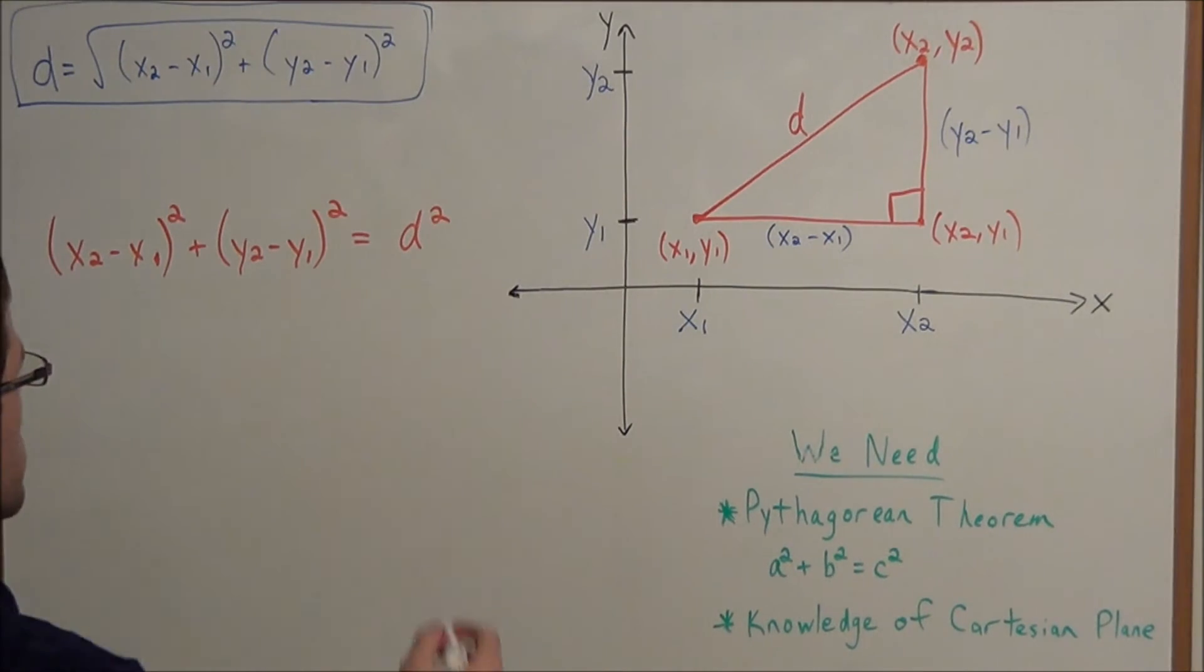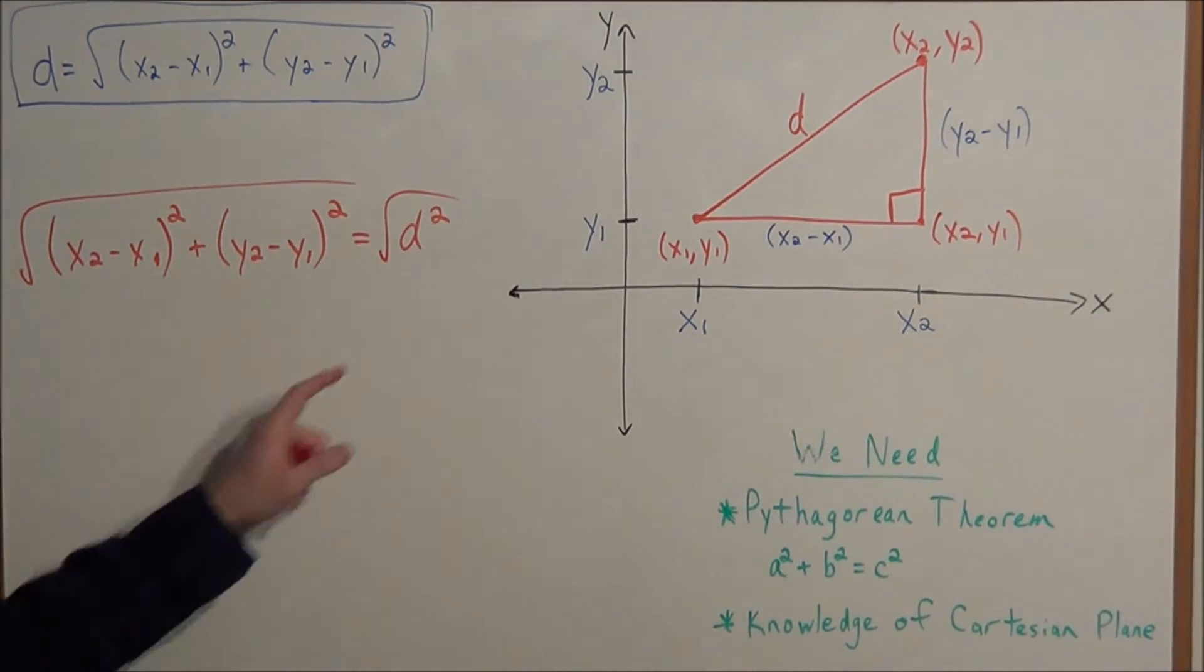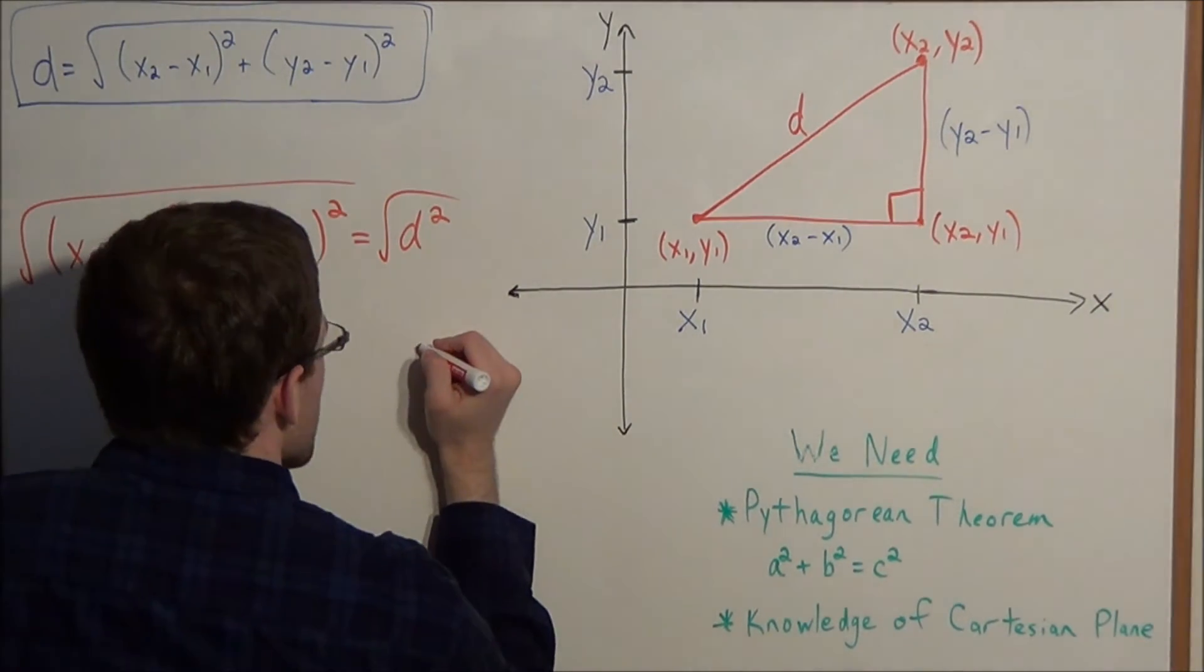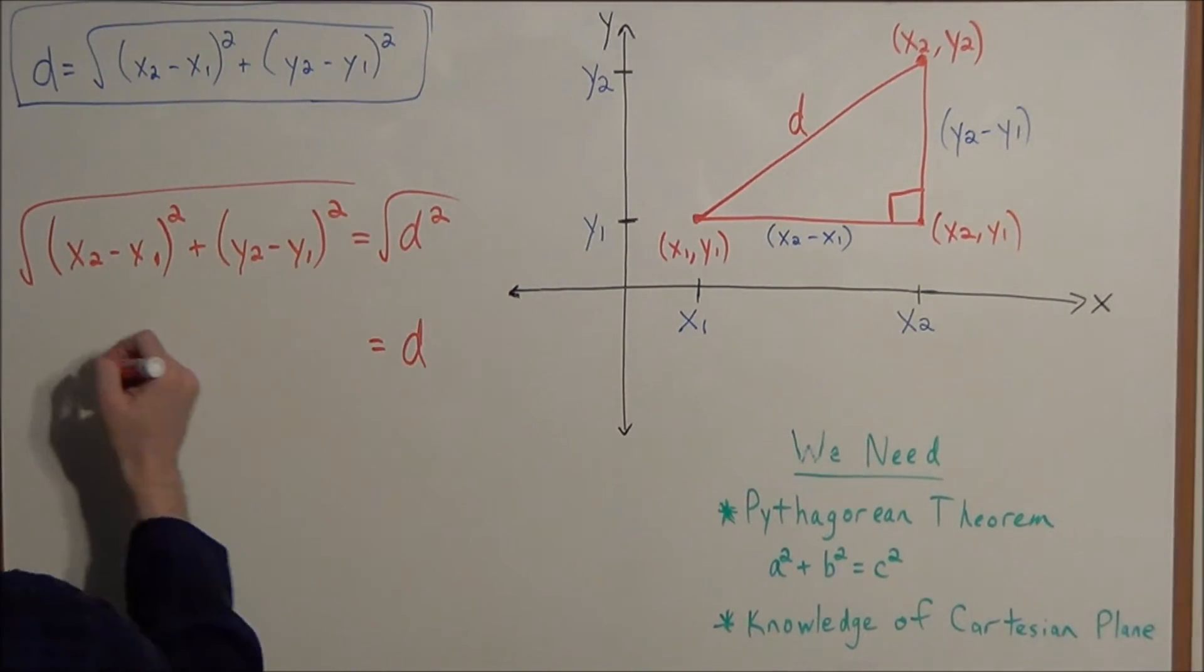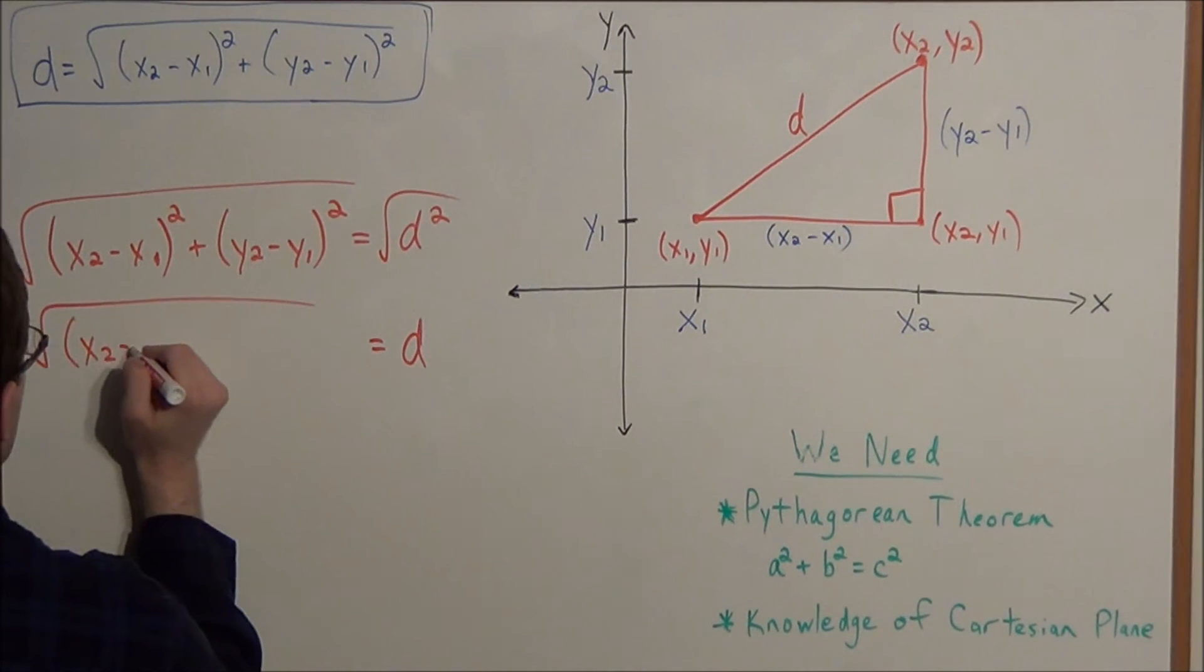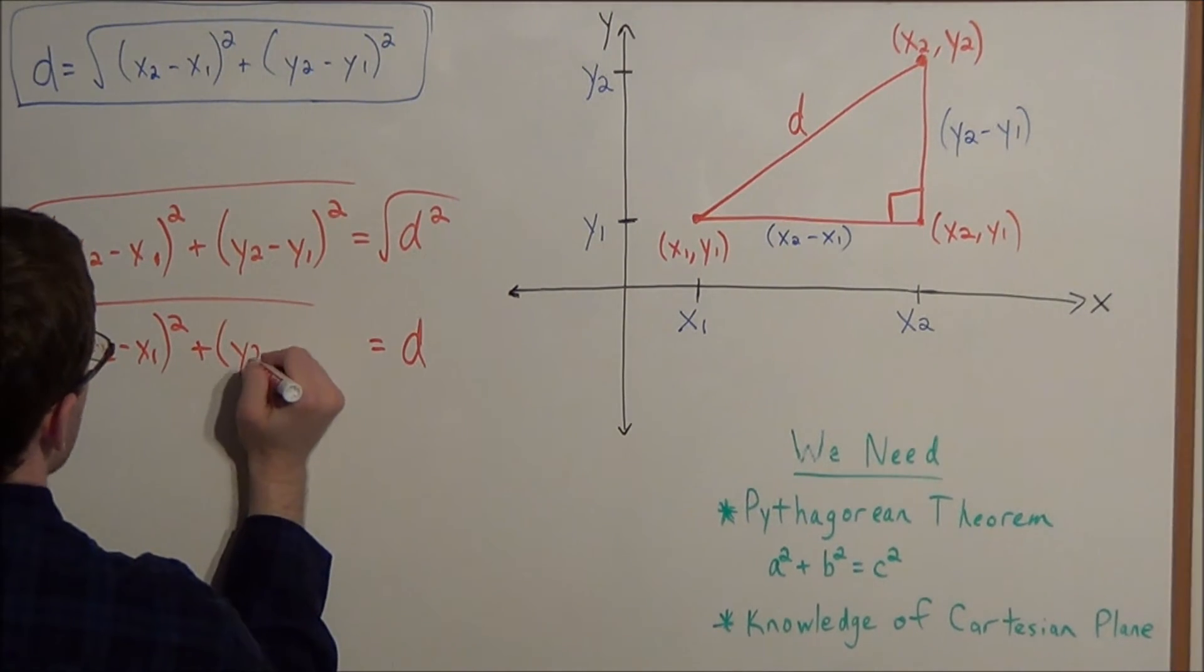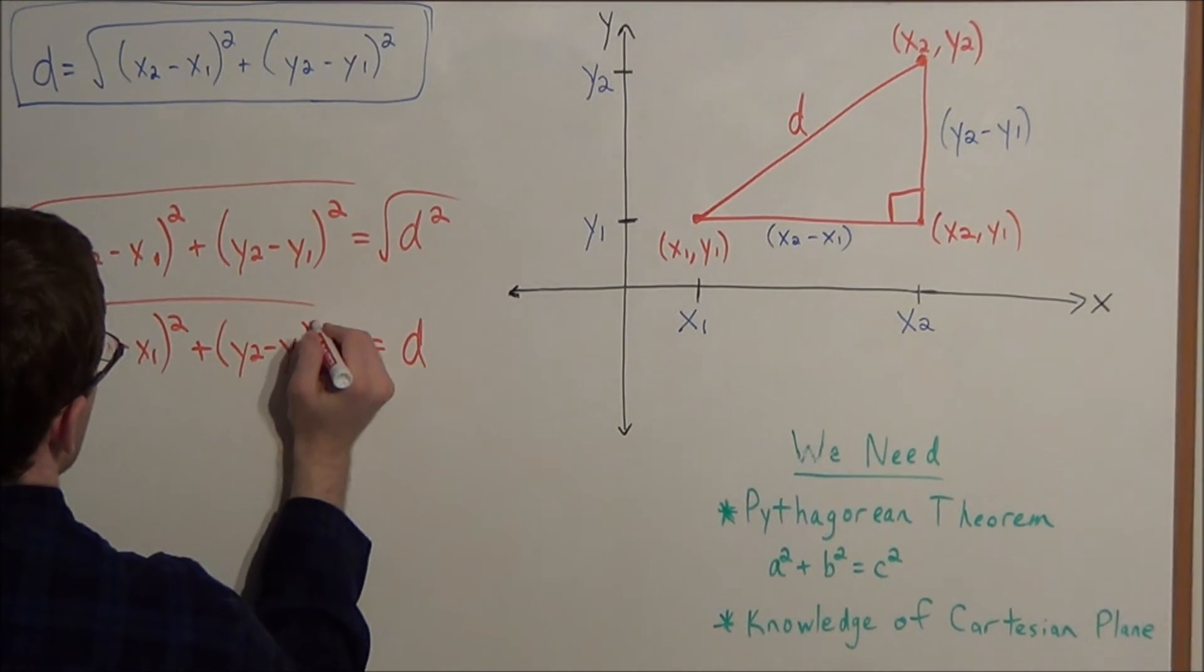So now to solve for d, all we need to do is take the square root of both sides and the next line will in fact be our distance formula. So we have d equals the square root of (x2 minus x1) squared plus (y2 minus y1) squared.